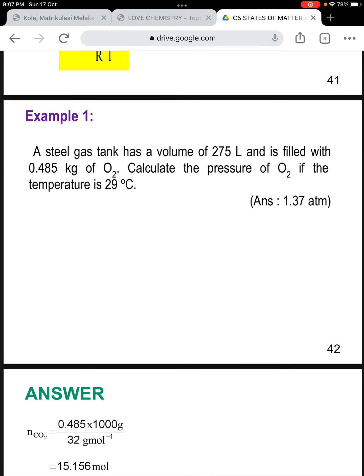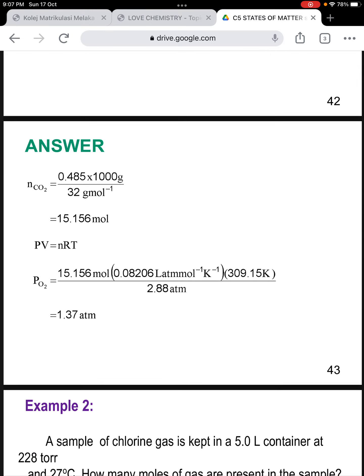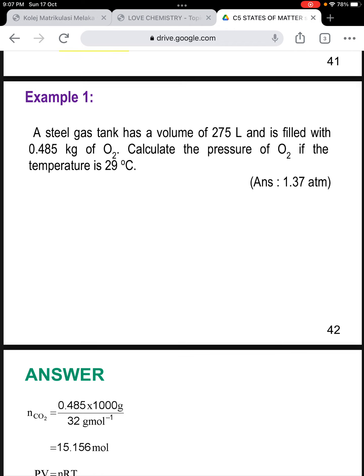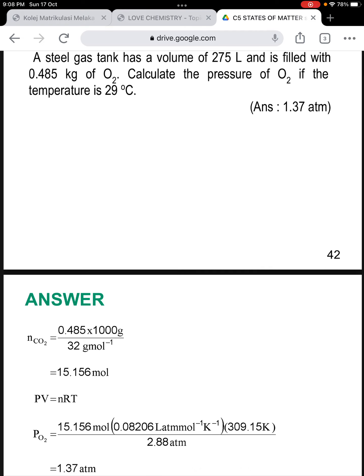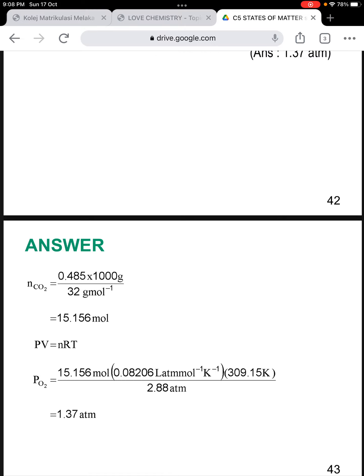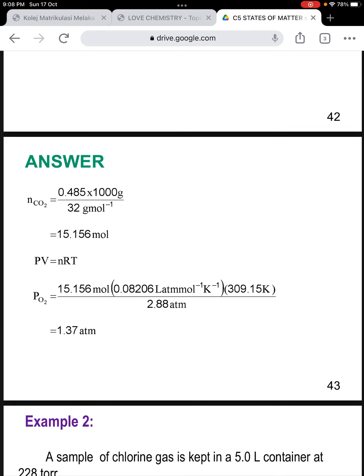Example 1: A steel gas tank has a volume of 275 liter and is filled with 0.485 kilogram of oxygen gas. Calculate the pressure of oxygen gas if the temperature is 29 degrees Celsius. Looking at the parameters, volume is given, mass of oxygen gas is given, pressure we have to calculate, and temperature is given. We will use ideal gas equation PV equals nRT. Before that, we calculate the moles using the formula mass divided by molar mass. Mass of oxygen gas is 0.485 times 10 to the power 3 gram divided by 32 gram per mole. We get 15.516 mole. There's a typing error here - it's O2 gas, not CO2.